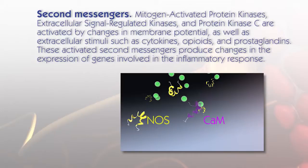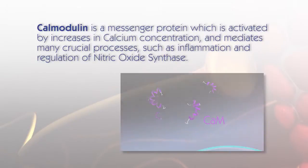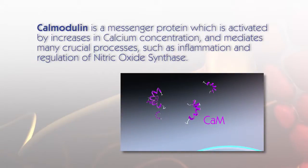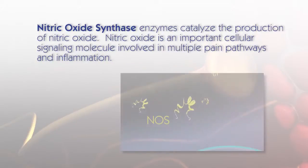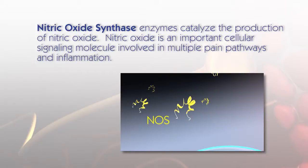These activated second messengers produce changes in the expression of genes involved in the inflammatory response. Calmodulin is a messenger protein which is activated by increases in calcium concentration and mediates many crucial processes, such as inflammation and regulation of nitric oxide synthase. Nitric oxide synthase enzymes catalyze the production of nitric oxide, which is an important cellular signaling molecule involved in multiple pain pathways and inflammation.